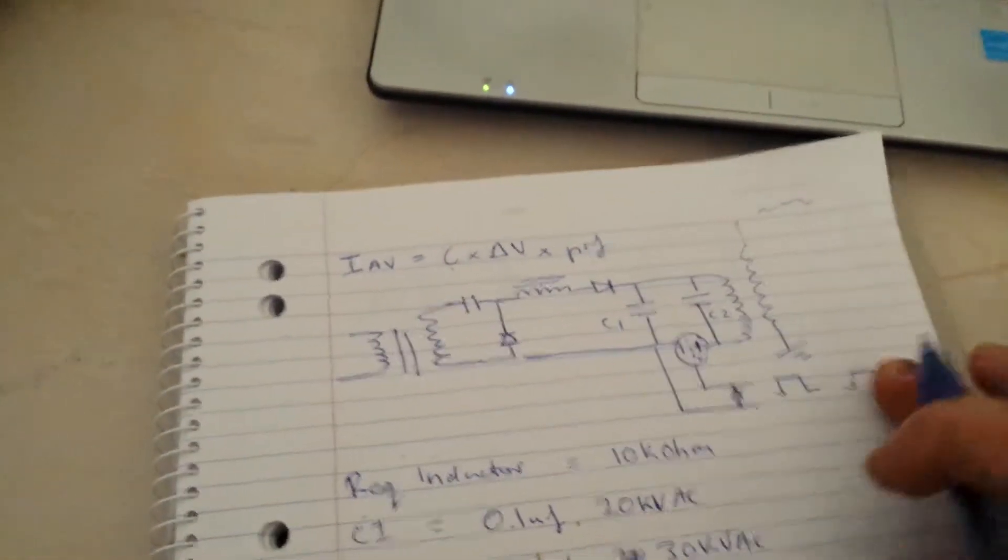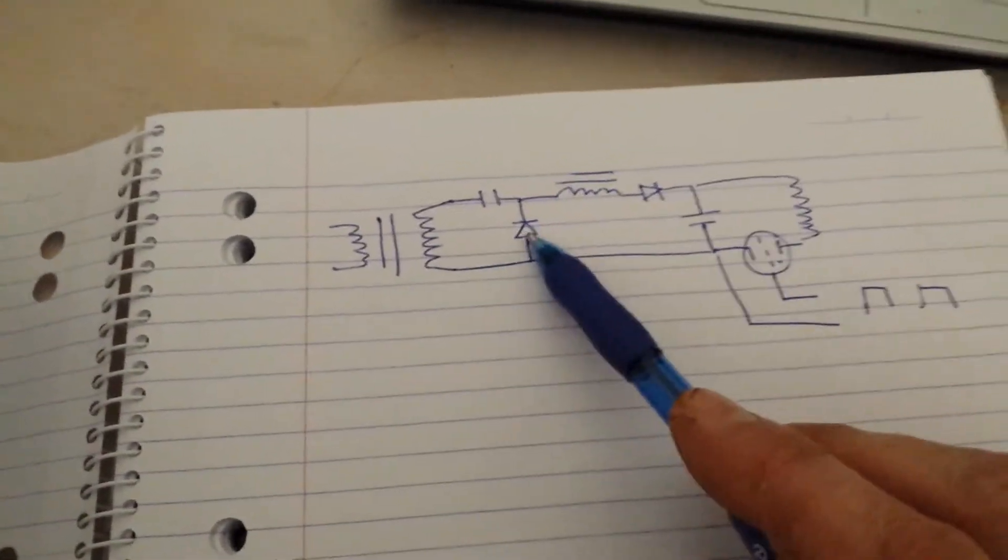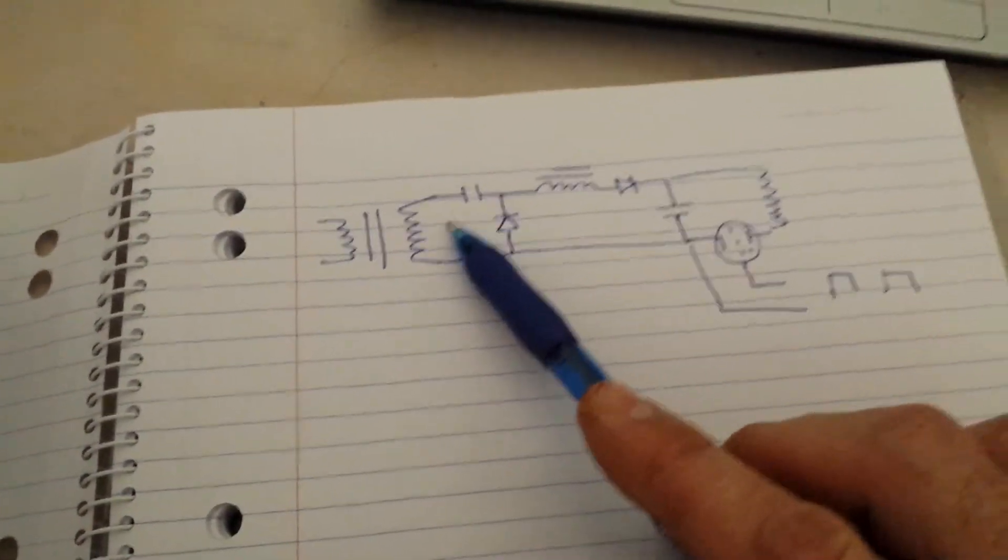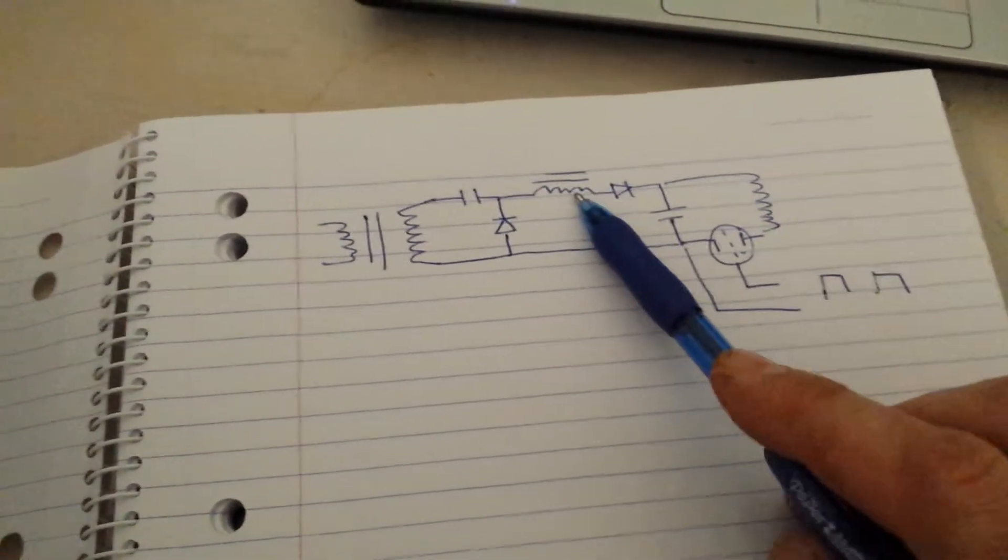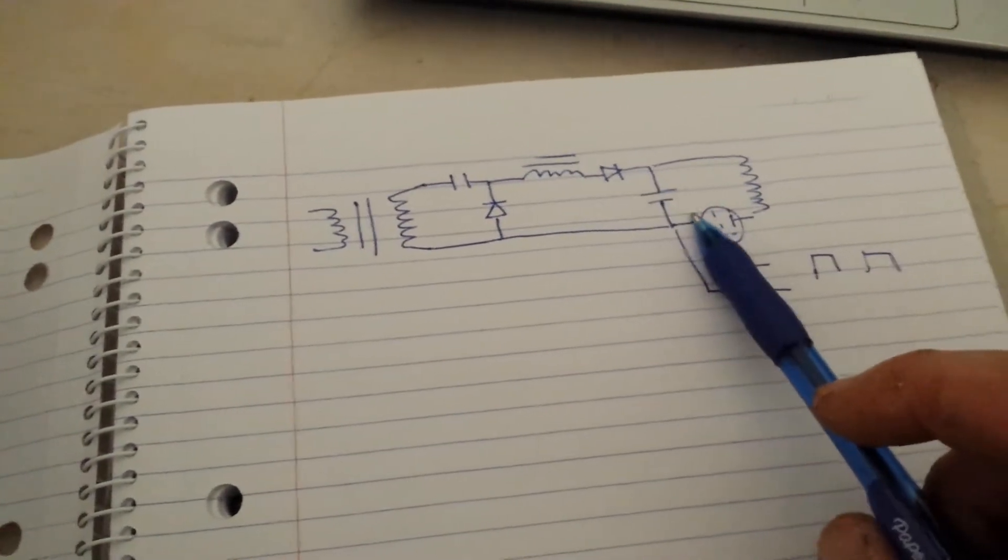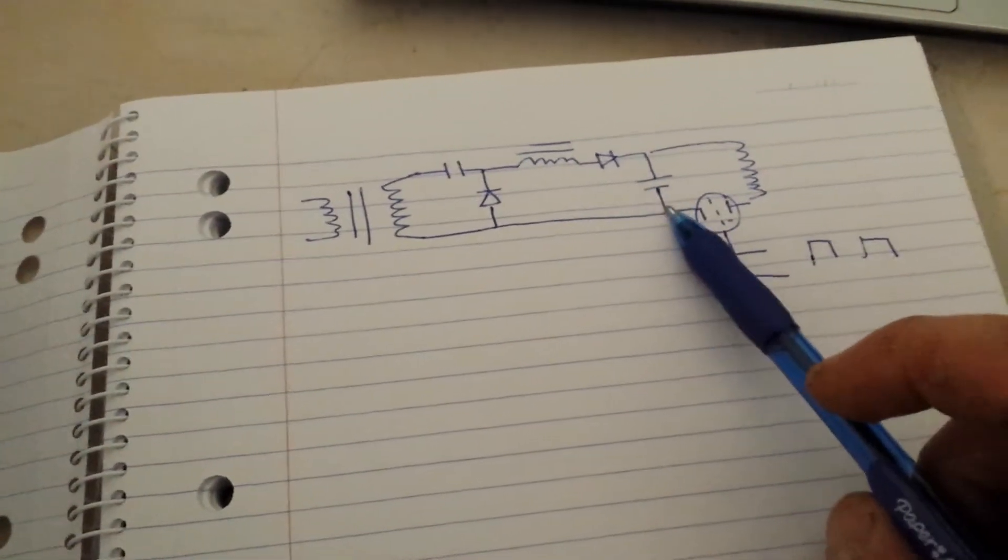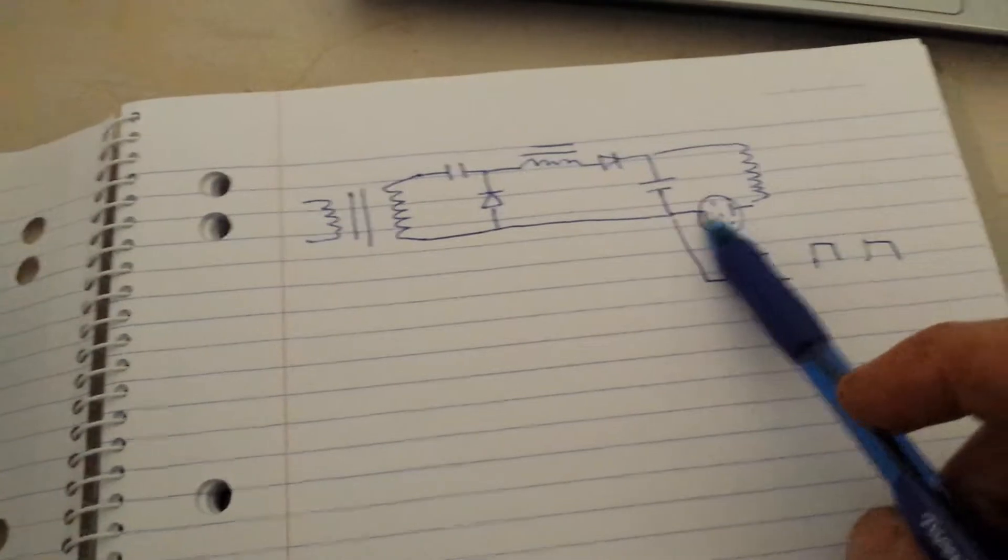Now, this circuit differs from what everyone else has been using, which is this one here, where you've got the high voltage side, and the voltage doubler through the charging reactor.